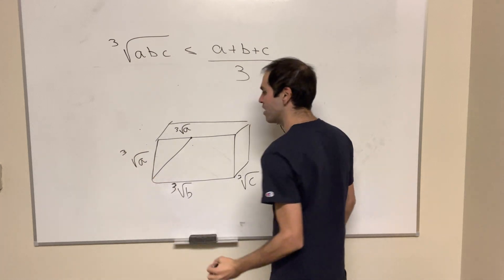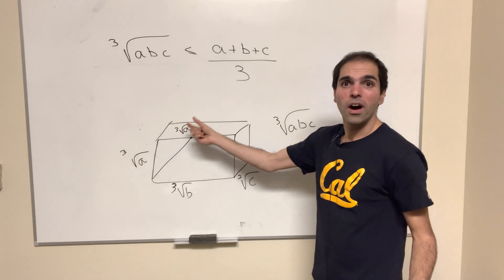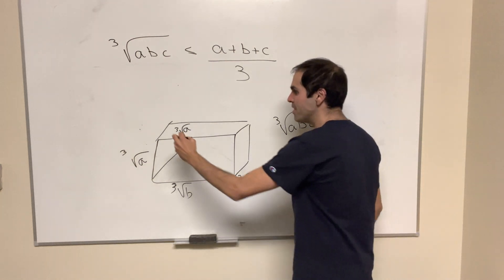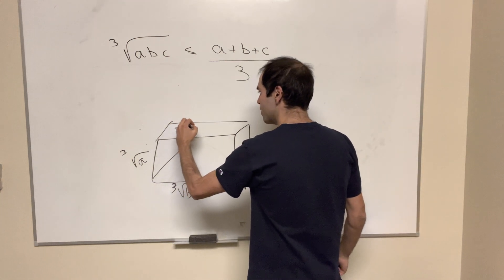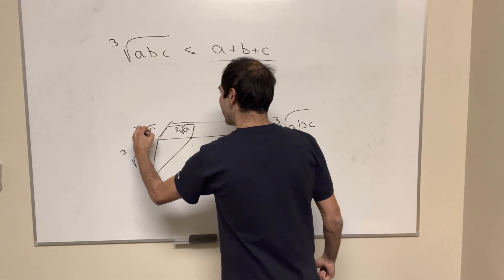So like this, you have this triangle, but then really to get one third a, maybe this also has to be a square side. So this would also be cube root of a.